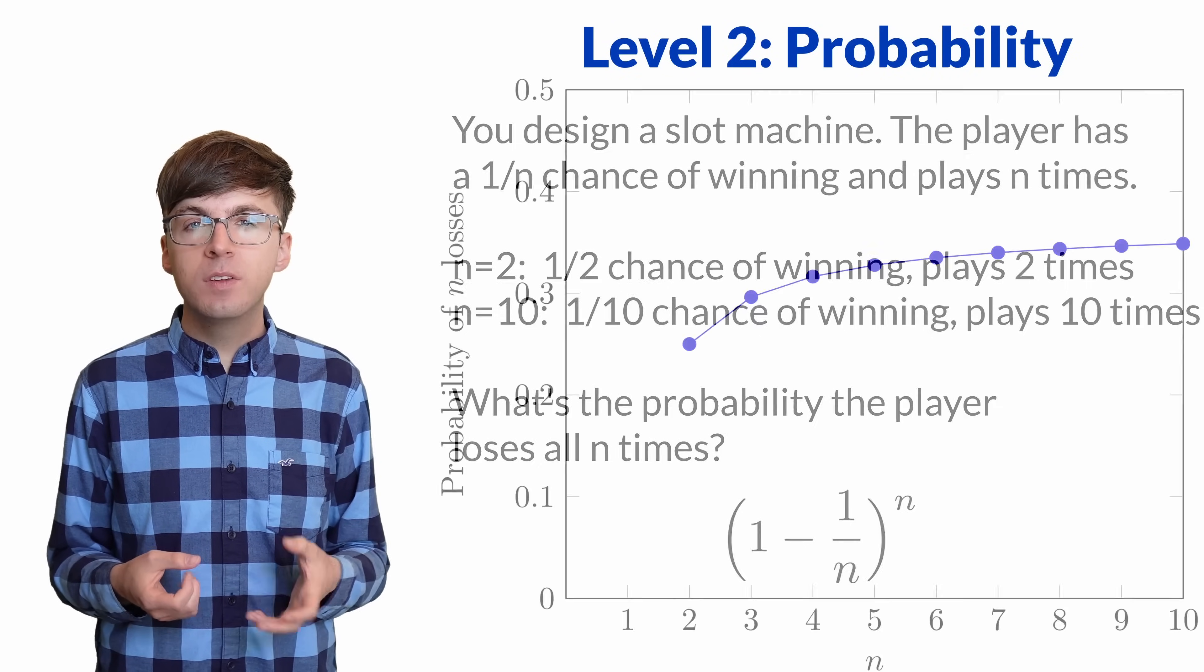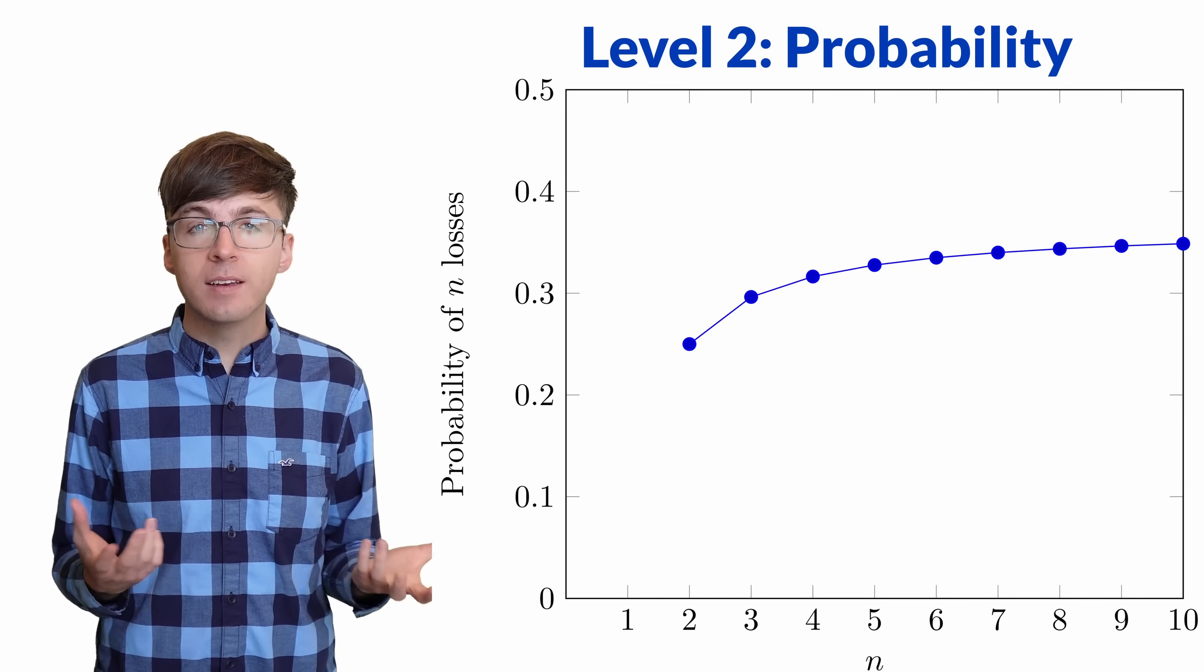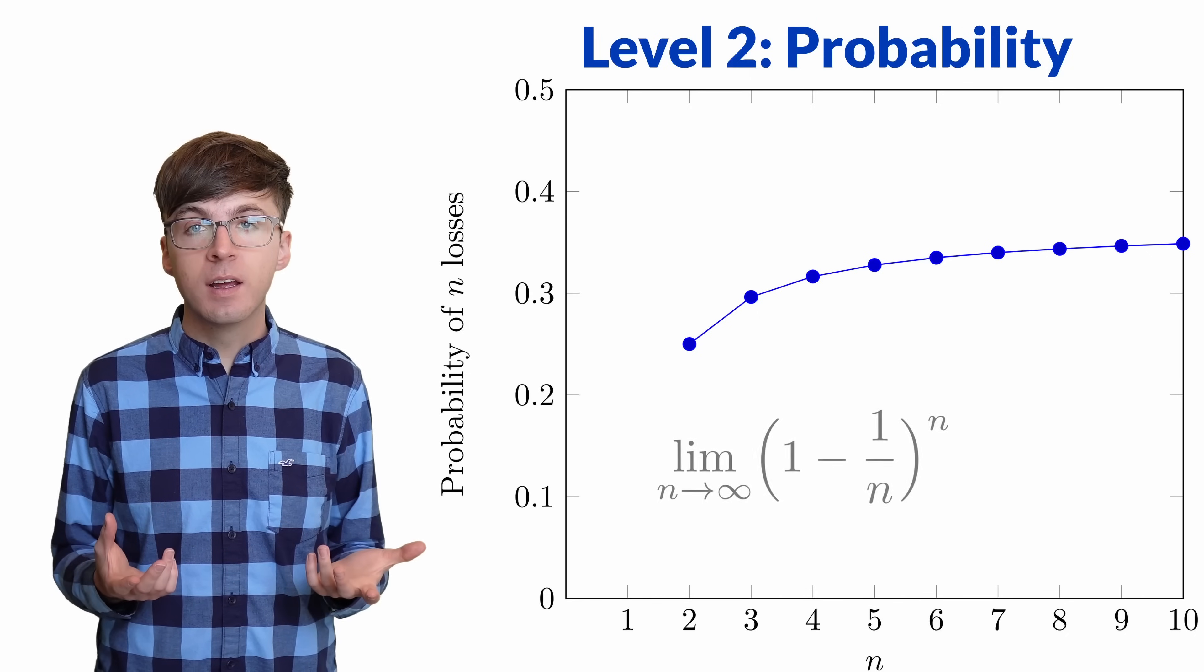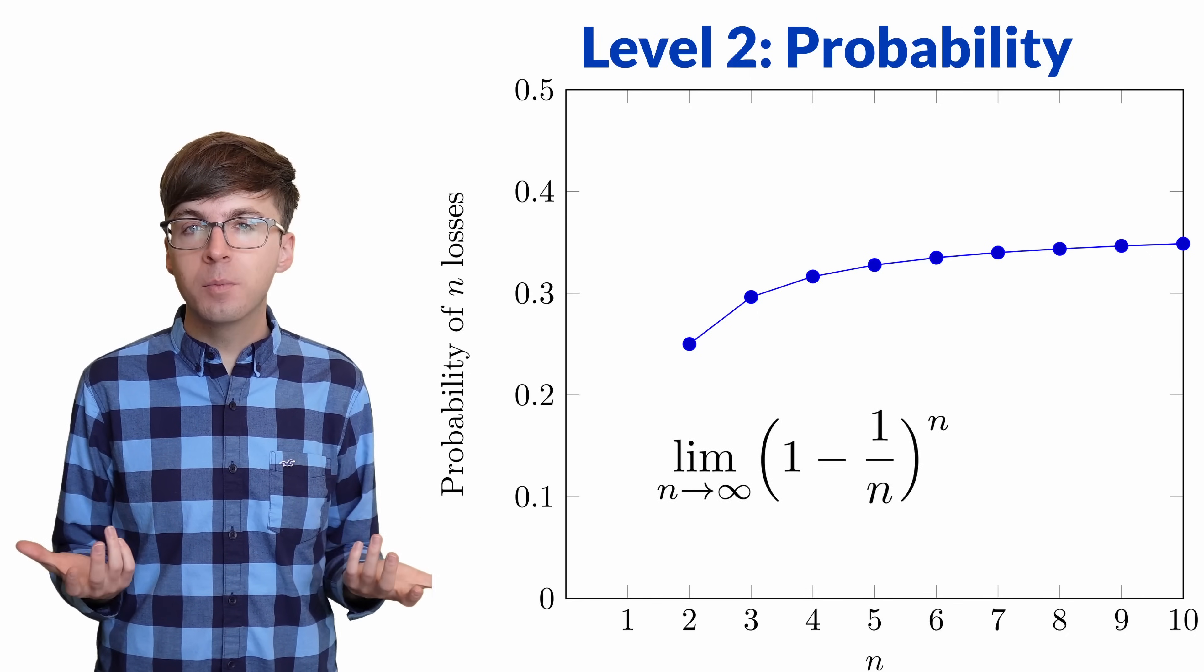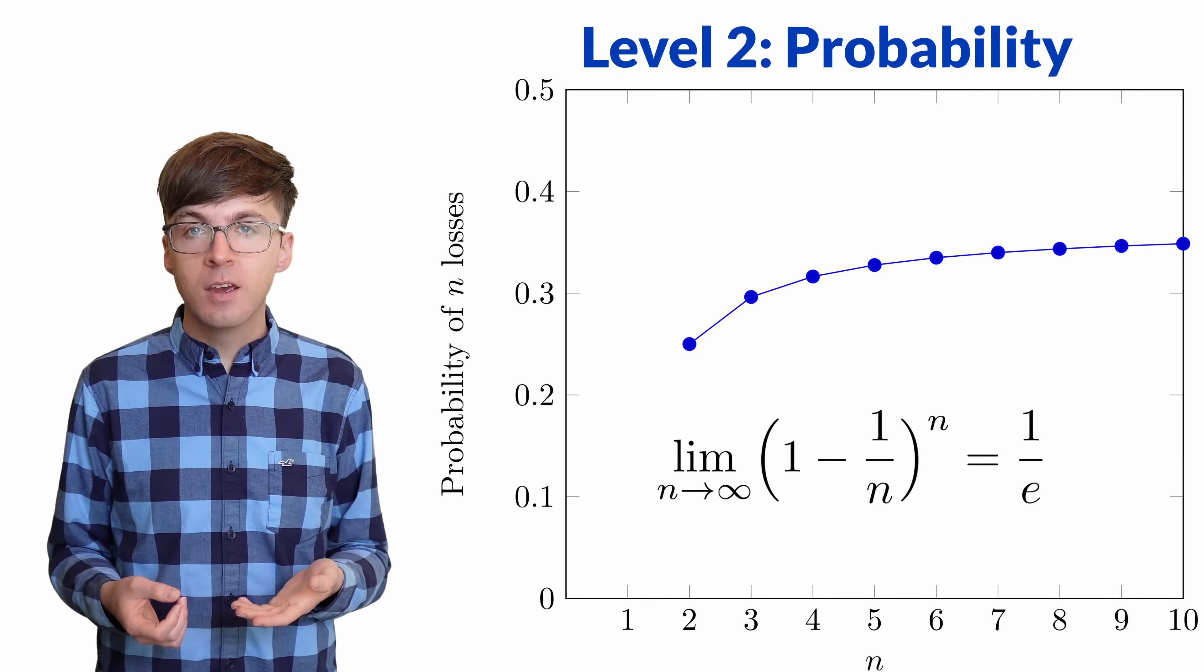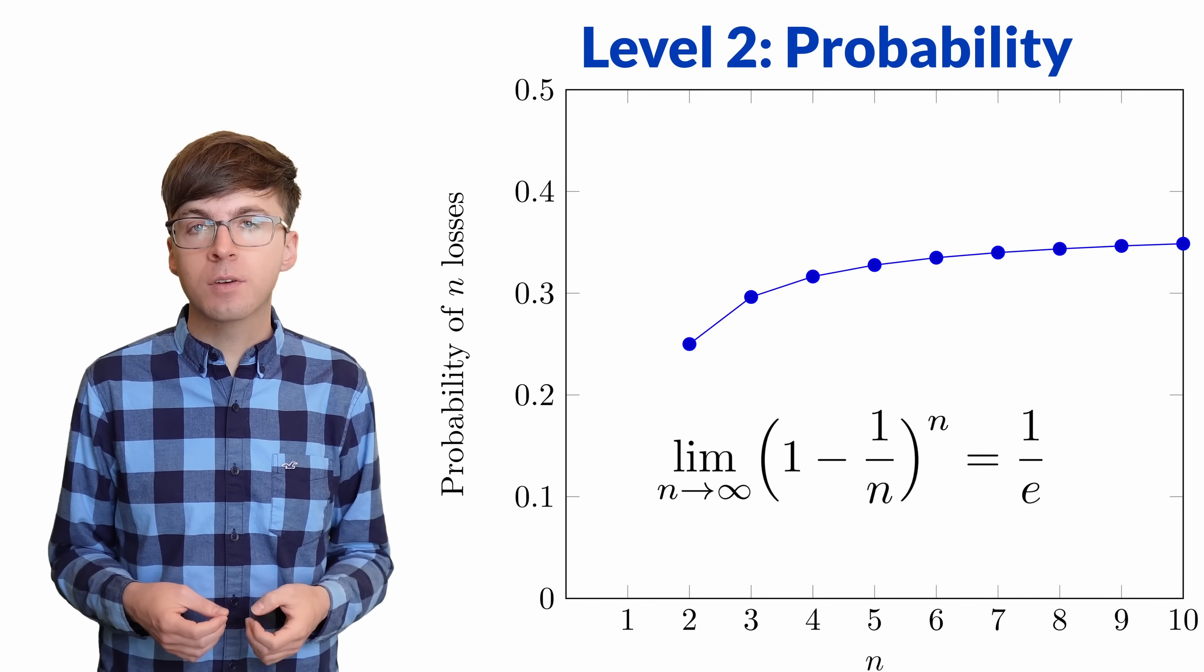Plotting these values, we see the probability of losing all n attempts is increasing as n goes to infinity. But there's a limit here, and the expression looks very similar to our limit definition of e. This limit turns out to be 1 over e, which we can find with a little calculus.